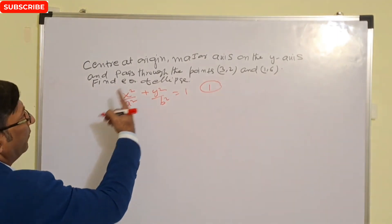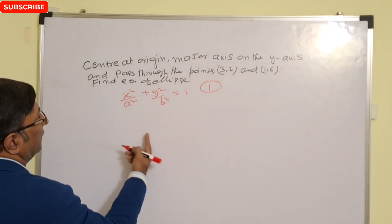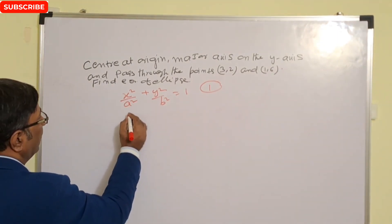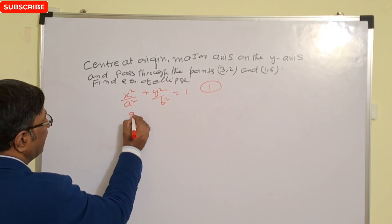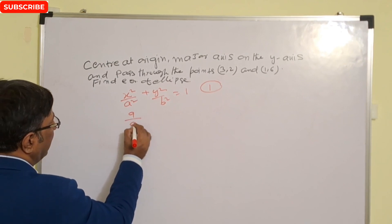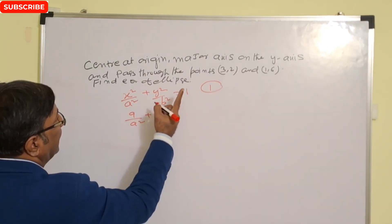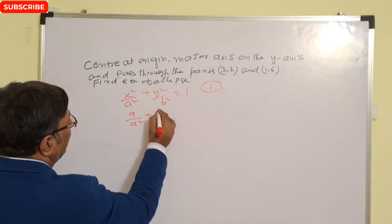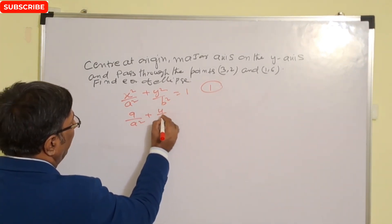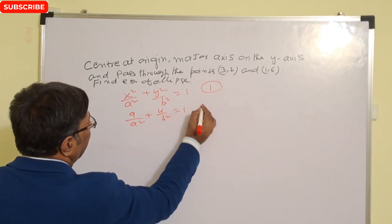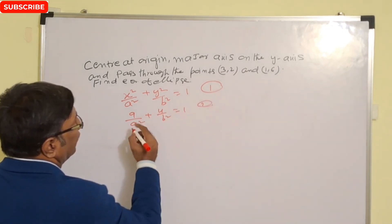The equation passes through (3, 2), so it must satisfy the equation. Put x = 3 and y = 2, giving us 9/a² + 4/b² = 1. This is the second equation.